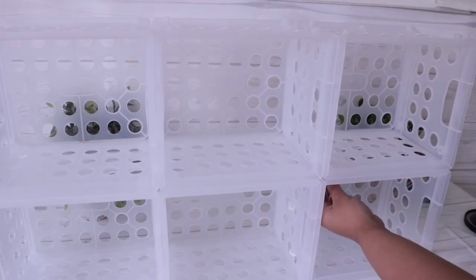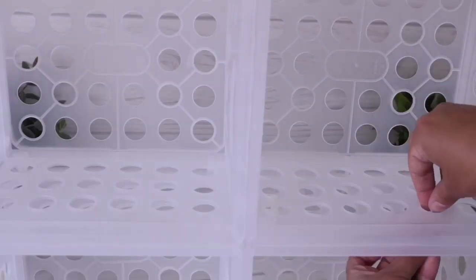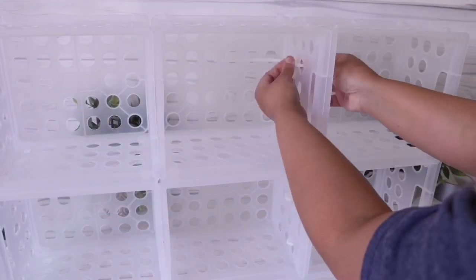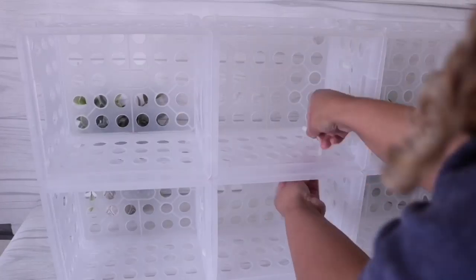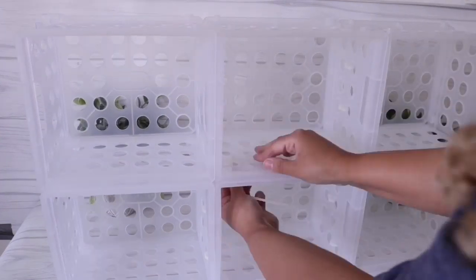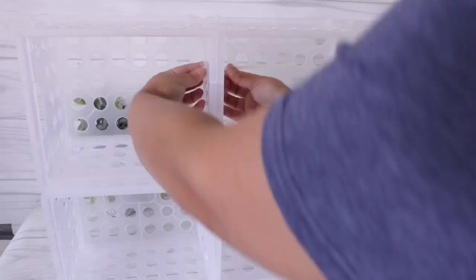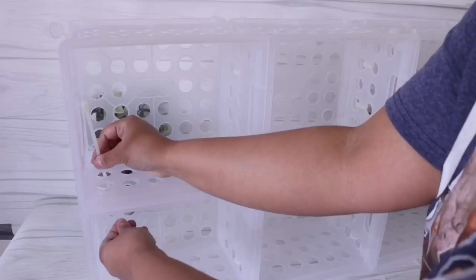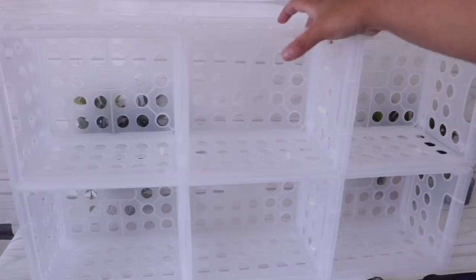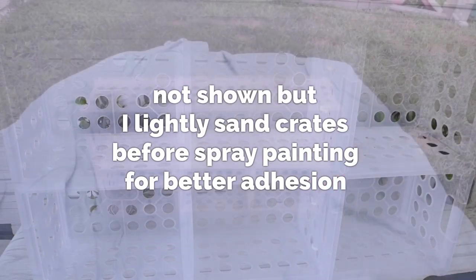Once you have that second row in place make sure that you're zip tying both the bottom and the sides so that you can pick this up and move it around and not have it basically fall apart. So just go ahead zip tie everything in place make sure that they're not visible and if they are that's totally okay once you spray paint this this won't look like zip ties.